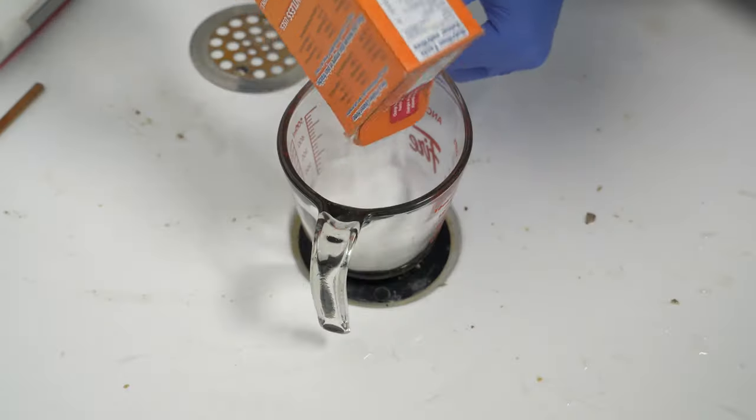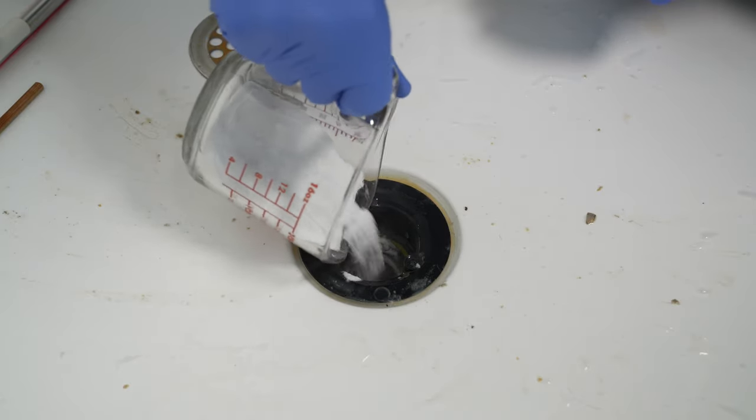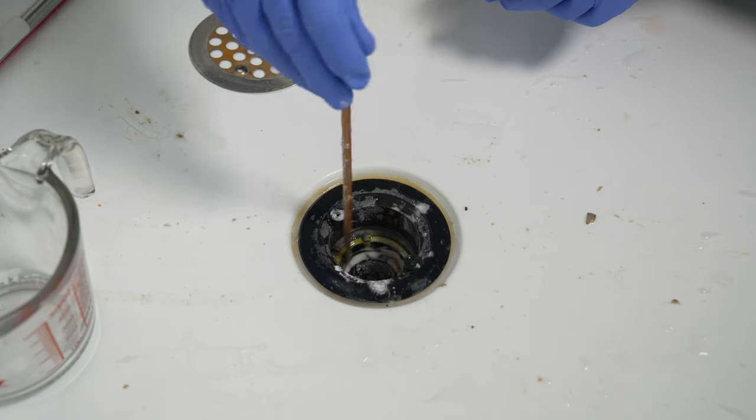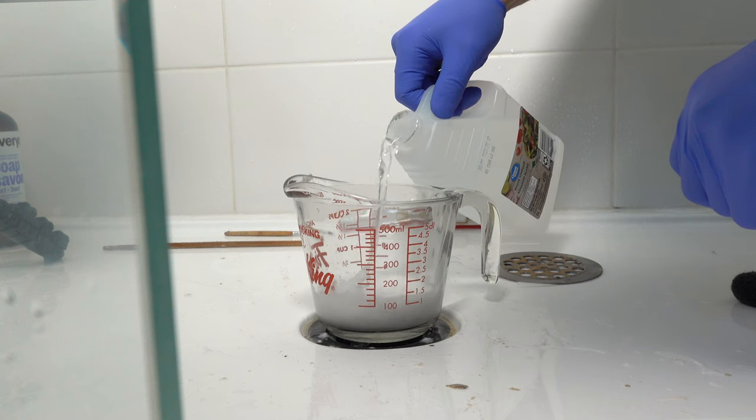After all hair is gone, take one cup of baking soda and put it into the drain, followed by one cup of vinegar.